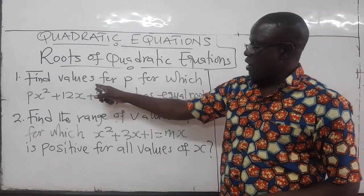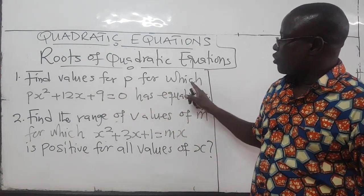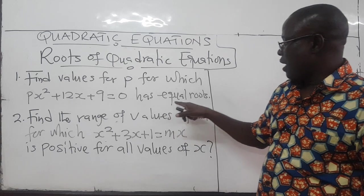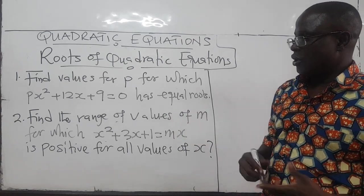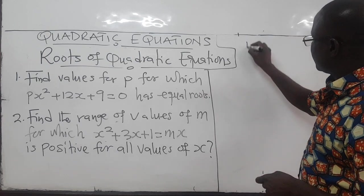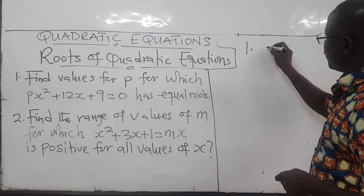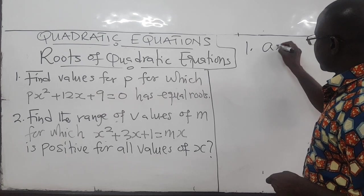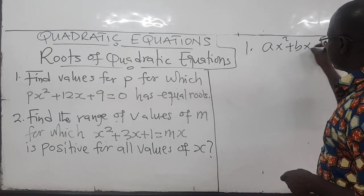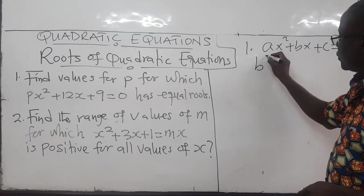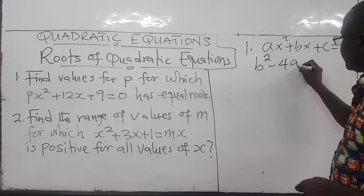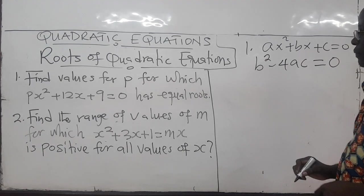And they use the language of the nature of the roots of quadratic equations. So we want to find the values of P for which this quadratic equation has equal roots. Remember we said for equal roots, we require that if Ax squared plus Bx plus C is zero, then B squared minus 4AC must be equal to zero.